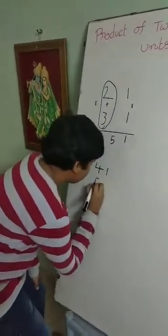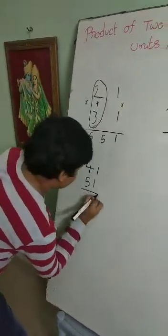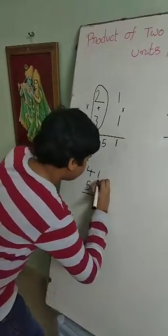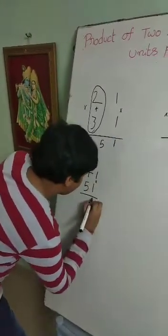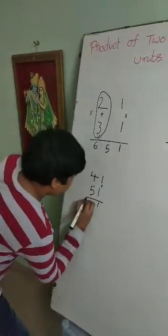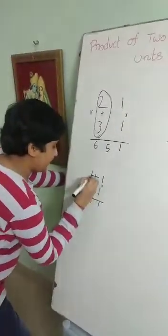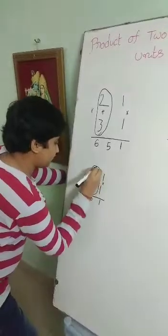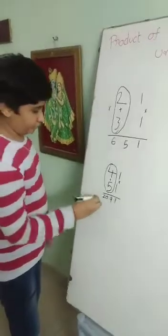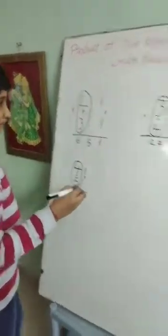Let us have one more example: 41 into 51. In the unit place there is 1, and in the 10s place there is 4 and 5. We multiply the unit place: 1 into 1 is 1. We multiply the 10s place: 4 into 5 is equal to 20. We add the 10s place digits: 4 plus 5 is equal to 9. The answer of 41 into 51 is equal to 2091.